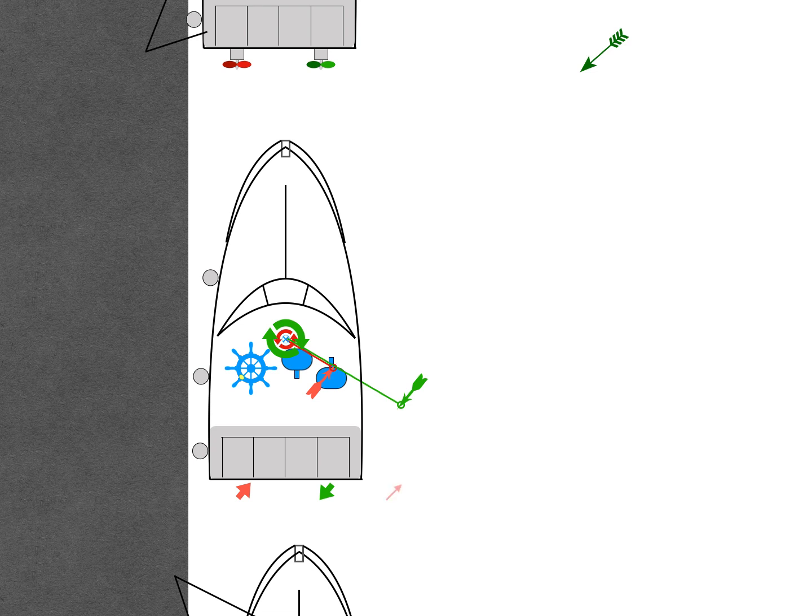The engine thrust vectors themselves are equal and opposite so they cancel each other out. If we did nothing then the boat would stay where it is but rotate around its axis to starboard, and this is the key.